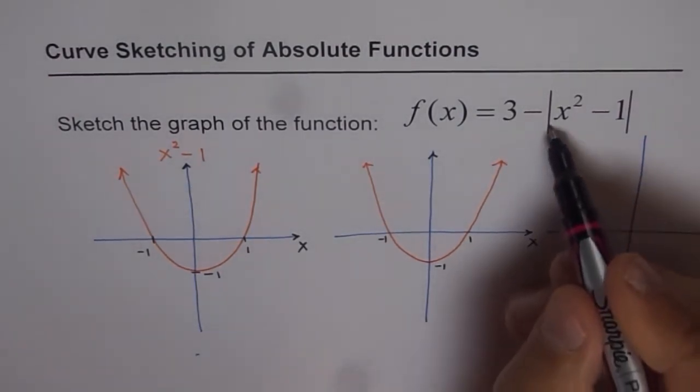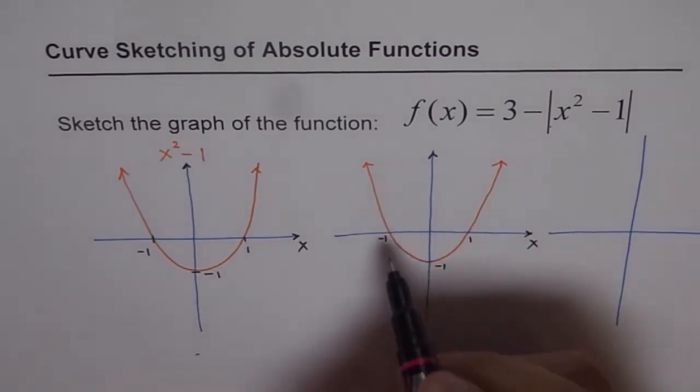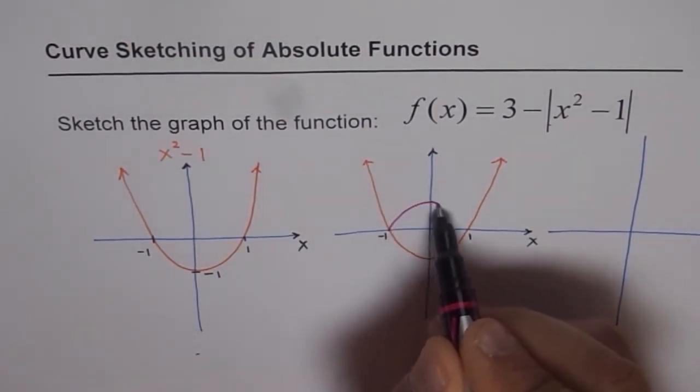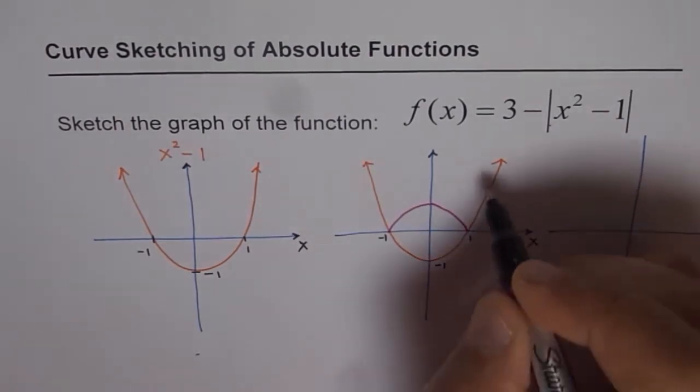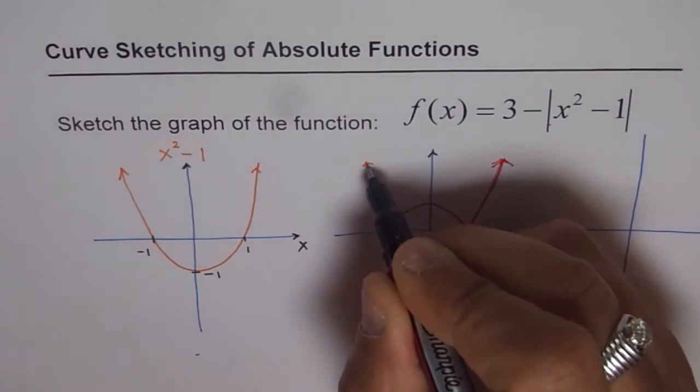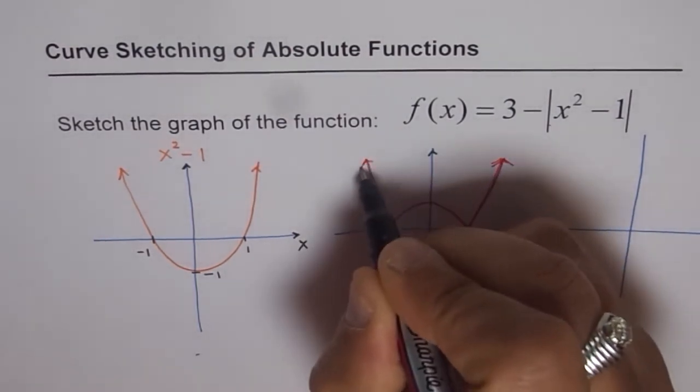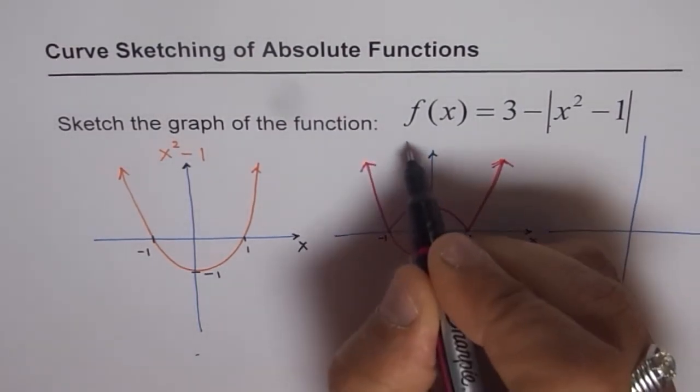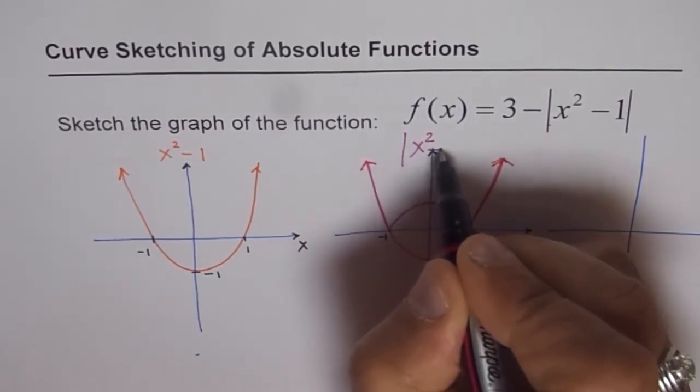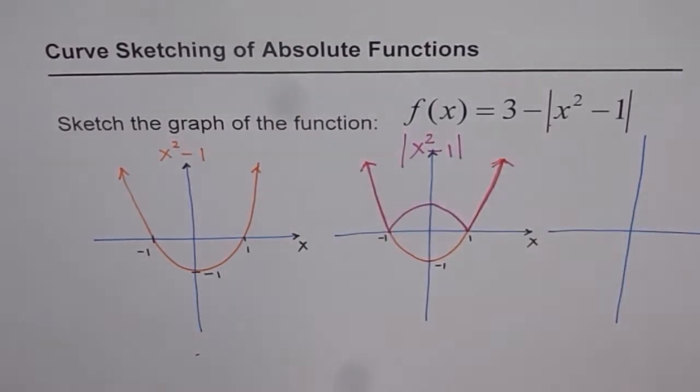So absolute means all positive values. So these values will kind of flip over. So we'll have the part of the curve like this now. So this graph represents absolute value, absolute of x squared minus 1. So that is absolute of x squared minus 1, correct?